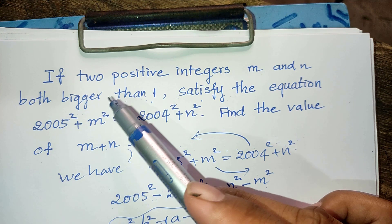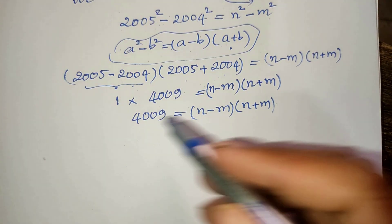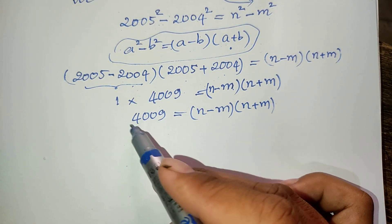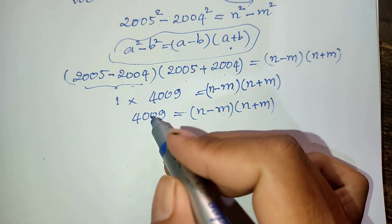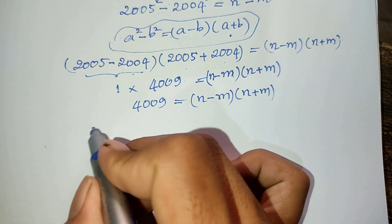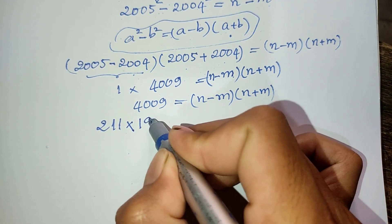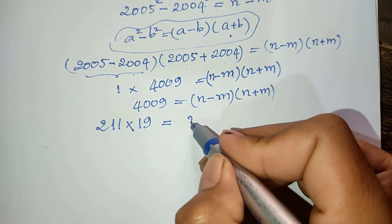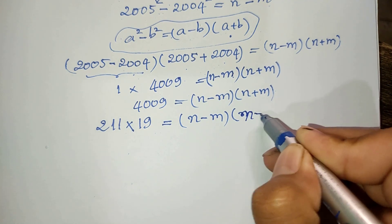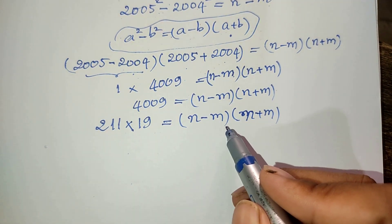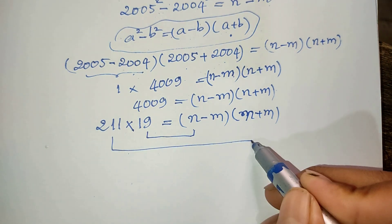Since m and n are both positive integers bigger than one, we must factor 4·cos(9°) into two factors that are both bigger than one and positive. We find that 4·cos(9°) equals 100 multiplied by 19, which equals (n minus m) multiplied by (m plus n). So we can identify the values of m minus n and m plus n.